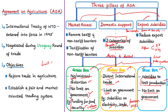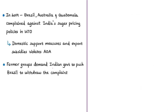These commitments are binding on member countries, and if violated, aggrieved countries can approach the WTO's dispute settlement body. Based on this, in early 2019, countries such as Brazil, Australia, and Guatemala dragged India into the WTO's dispute settlement mechanism. These countries alleged that India's domestic support measures and export subsidy measures provided to its sugarcane farmers and exporters were in violation of the Agreement on Agriculture. The WTO set up a panel to look into these complaints.